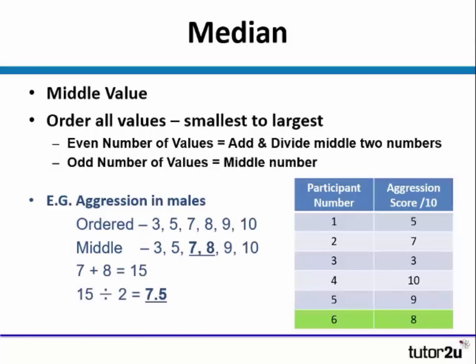If we had an even number of values — as you can see at the bottom of the table, I've now added a sixth participant — we order them: 3, 5, 7, 8, 9, 10. The middle numbers are now 7 and 8. We then have to figure out what the middle number is, so we add the two together and divide by 2, and the answer is 7.5.